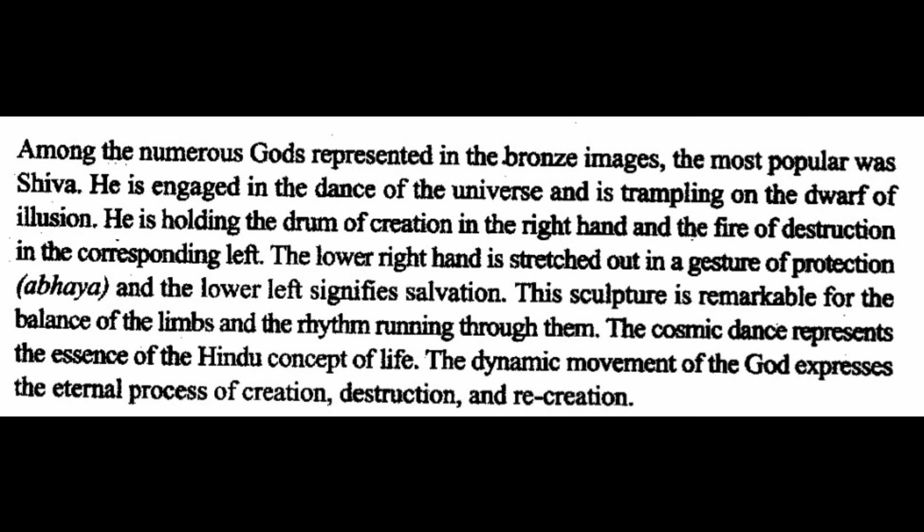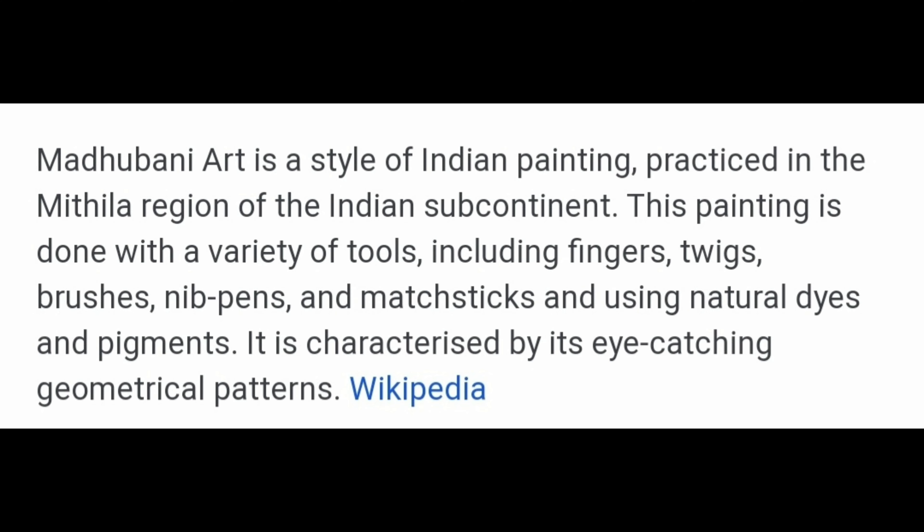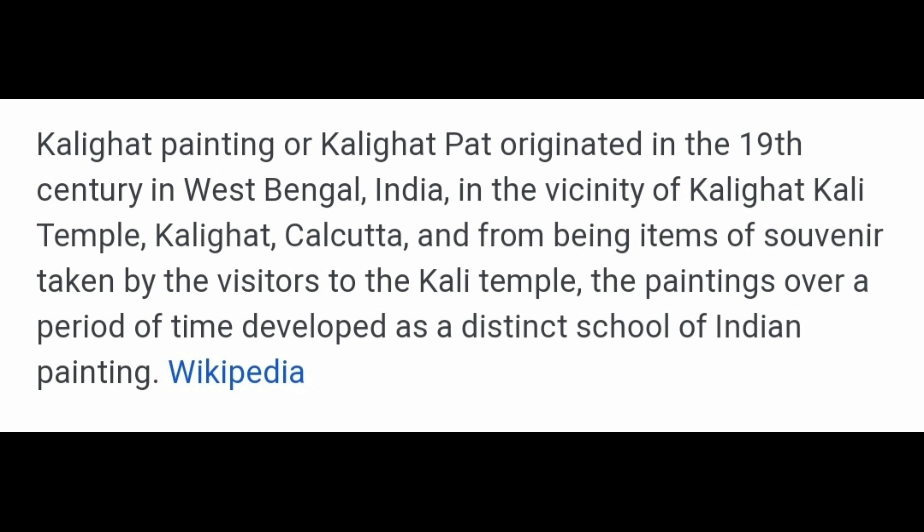Question 13: Write short notes on (A) Madhubani Painting and (B) Kalighat Painting. Madhubani art is a style of Indian painting practiced in the Mithila region of the Indian subcontinent. This painting is done with a variety of tools including fingers, twigs, brushes, nib pens and matchsticks, using natural dyes and pigments. It is characterized by its eye-catching geometrical patterns. Kalighat painting originated in the 19th century in West Bengal, India, in the vicinity of the Kalighat Kali Temple, Kolkata. From being a souvenir item taken by visitors to the Kalighat temple, the paintings over a period of time developed as a distinct school of Indian painting.